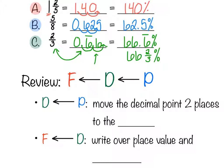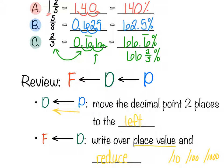If we have a percent and want to convert it to a fraction, first convert the percent to a decimal by moving the decimal point two places to the left. Then write that decimal number over its place value — one decimal place goes over 10, two decimal places over 100, three over 1000, and so on. Make sure to reduce the fraction when done.